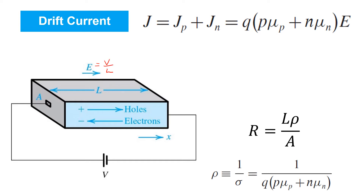The drift current density that arises in response to this electric field has two components: that due to holes and that due to electrons. The component due to holes is proportional to the electronic charge Q times the concentration of holes in the semiconductor, and is proportional to the electric field E that's applied. And there's a final constant of proportionality for which we use the symbol μp, representing the mobility of holes in the semiconductor — a measure of the ease with which holes move through this particular semiconductor material.